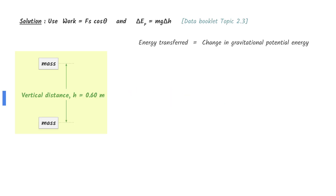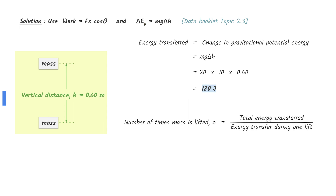The energy transferred to the mass is equal to the change in gravitational potential energy of the mass. 20 kilograms is lifted a vertical distance of 0.60 meters. Use the equation given in the data booklet to calculate the energy transferred. The number of times the mass is lifted can be found by dividing the total energy transferred by the energy transferred during one lift. Put in the numbers and do the calculation to find your answer.